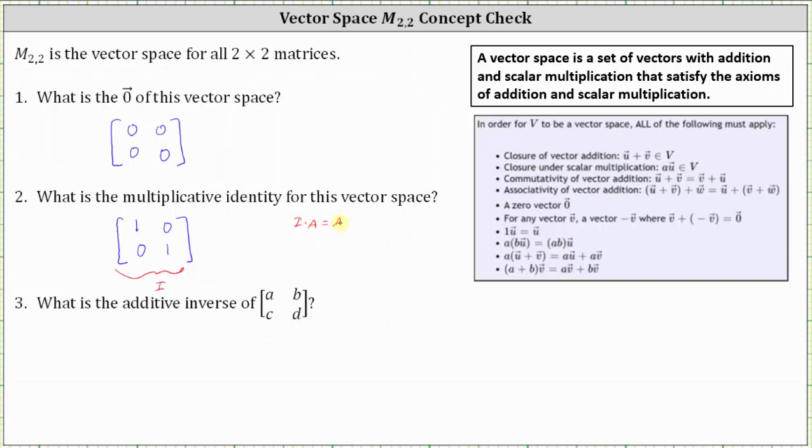Number three, what is the additive inverse of the given two by two matrix? This is referring to the property vector V plus the opposite of vector V equals a zero vector.